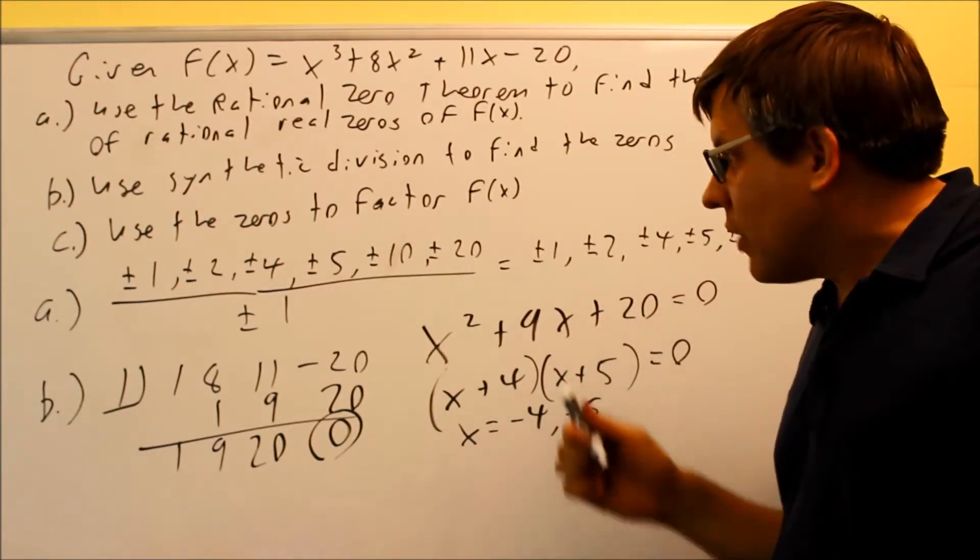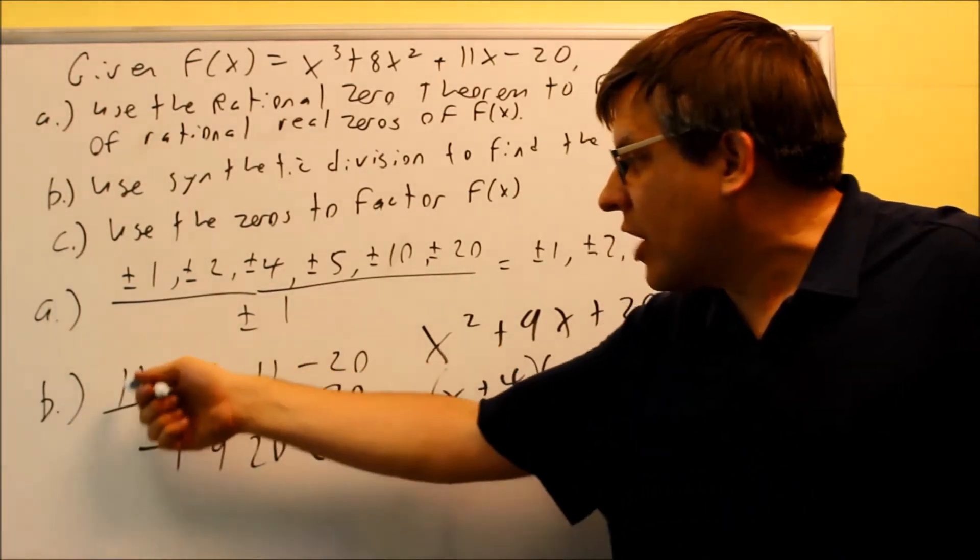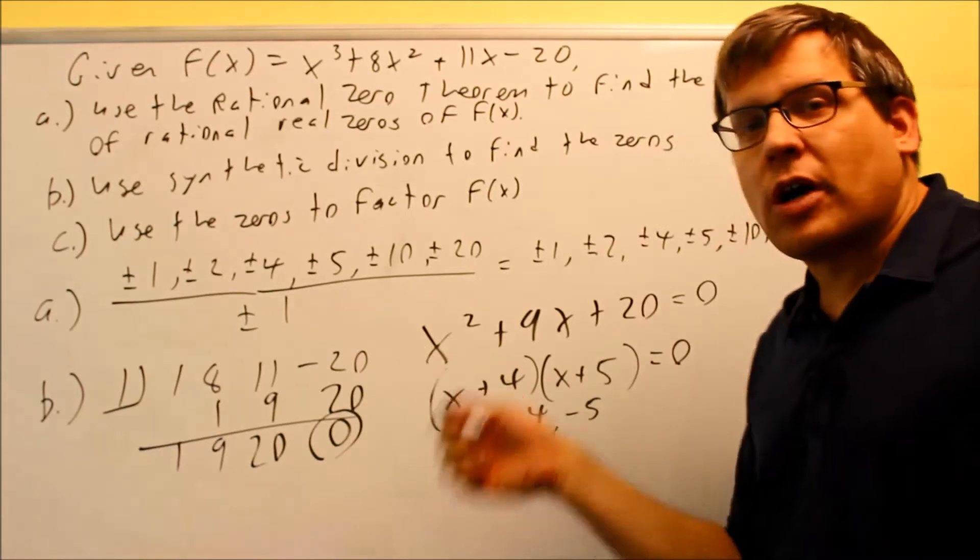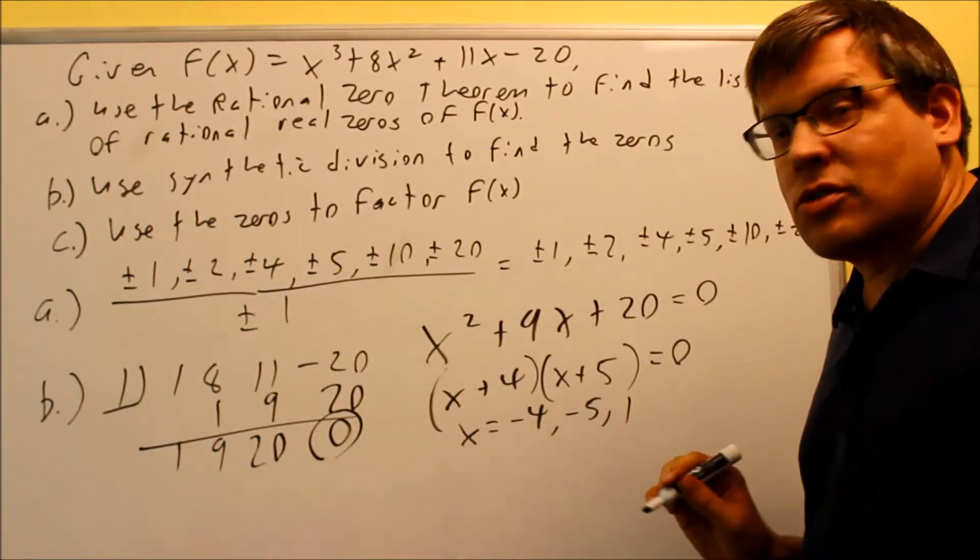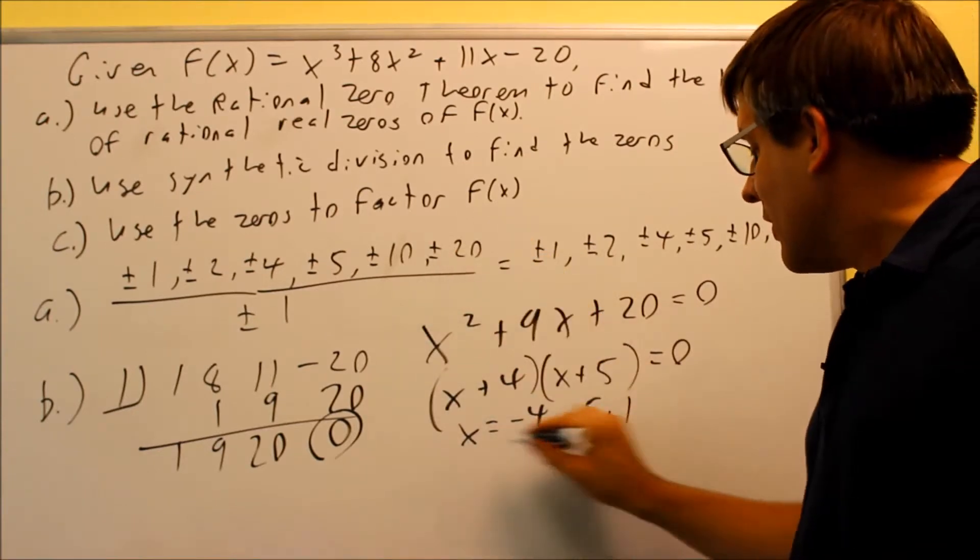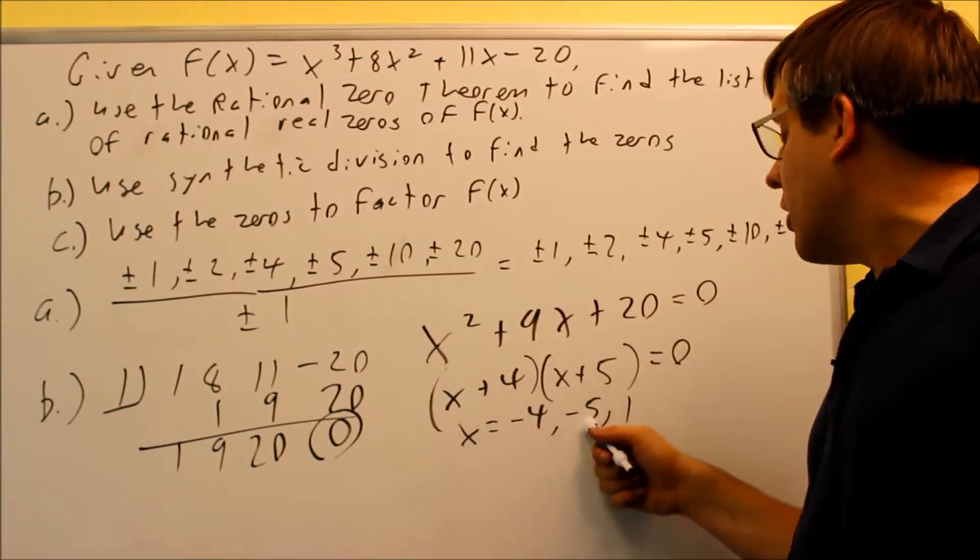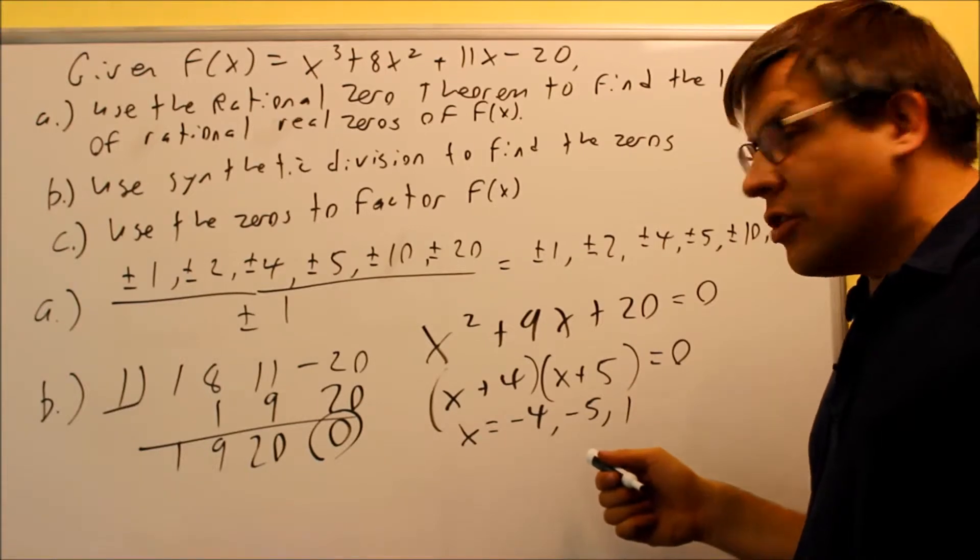When I write my answer however don't forget about the one that we found originally. So the one that we found either by trial and error or by using a calculator, that's going to be another one of my answers. So for part B you would put this in: negative four, negative five, and one. Those are all the zeros.